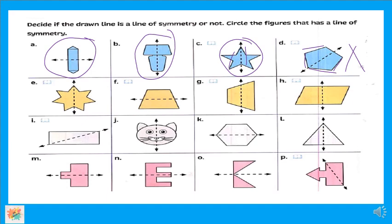نروح letter E — الشيب ده line of symmetry ولا لأ؟ آيوه line of symmetry، وده يعتبر symmetrical line. برافو عليك. طيب letter F — سهلة جداً — الـ line اللي رسمه ده يعتبر line of symmetry؟ No، it's not. وأنا مش نعمل عليه circle.